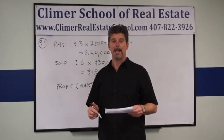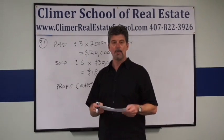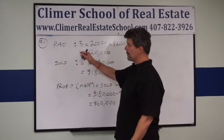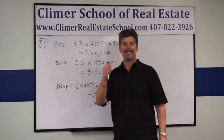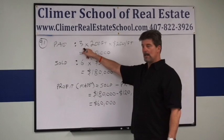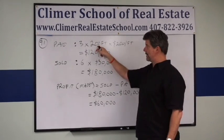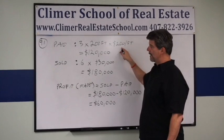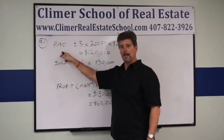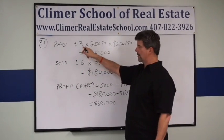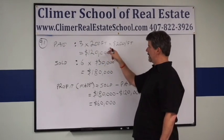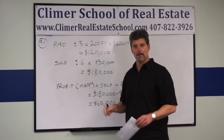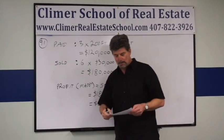Developer Pam bought three 200-foot lots on the river for $200 per front foot. Write down the important information: three 200-foot lots for $200 a front foot — that's how much she paid. If you put in your calculator three times 200 times 200, she paid $120,000 for those three lots.